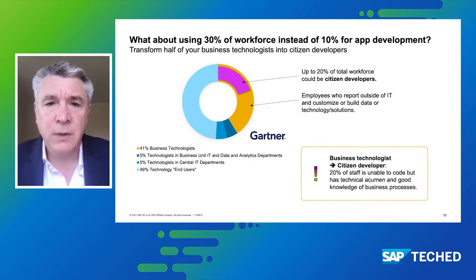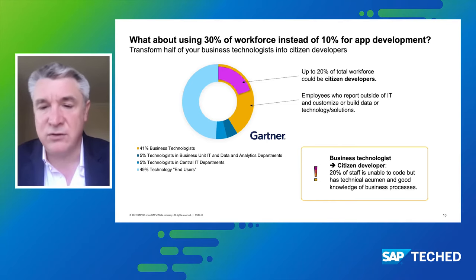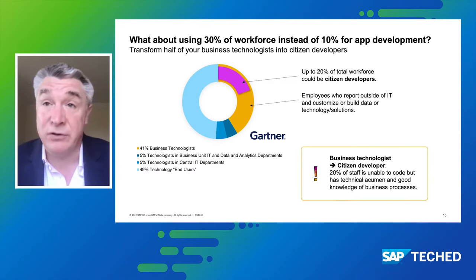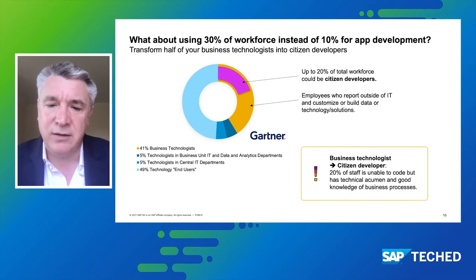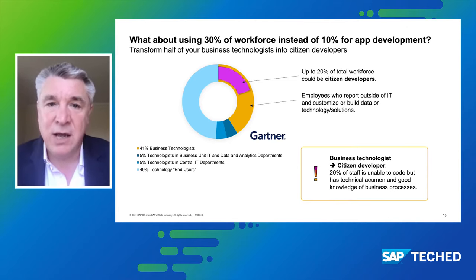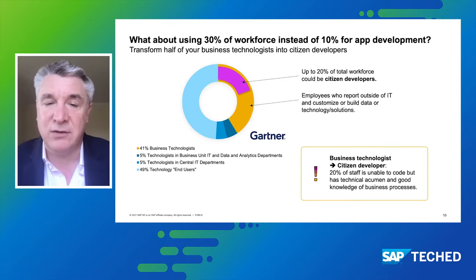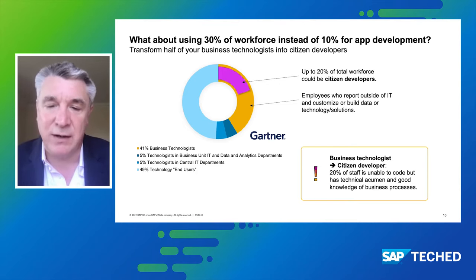Looking at what Gartner have to say: around 10% of an organization typically has the capability to develop apps, leveraging tools like our Business Application Studio — which is a low-code tool, but not a no-code tool. So how can we put the power into the hands of employees to allow them to build processes and apps to meet their business needs? From a Gartner perspective, we're looking to increase that capability up to 30% of your entire employee workforce, creating the citizen developer who can build both processes and apps using the low-code, no-code portfolio.